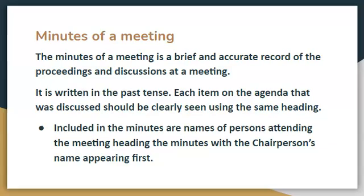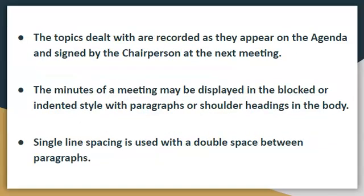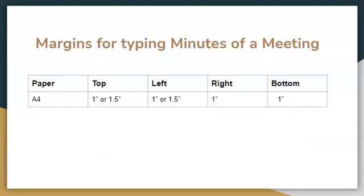Now let's look at the final document: the minutes of a meeting. The minutes of a meeting is a brief and accurate record of the proceedings and discussions at a meeting. It is written in the past tense. Each item on the agenda that was discussed should be clearly shown using the same heading. Included in the minutes are the names of persons attending, with the chairperson's name appearing first. Topics are recorded as they appear on the agenda and signed by the chairperson at the next meeting. Minutes may be displayed in the blocked or indented style with paragraphs or shoulder headings in the body. Single line spacing is used with a double space between paragraphs.